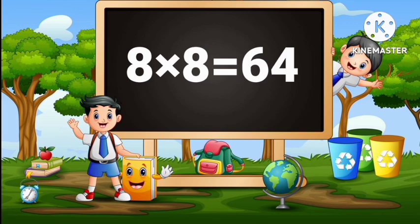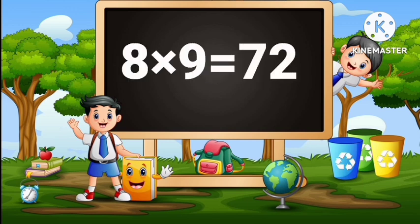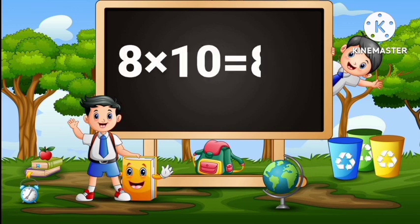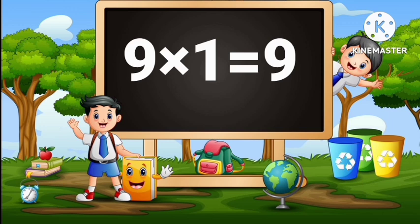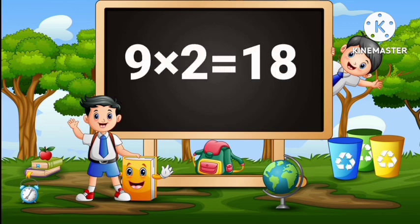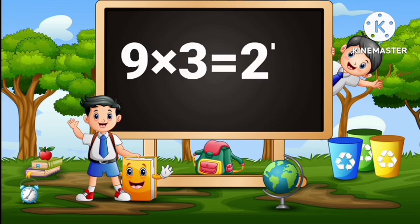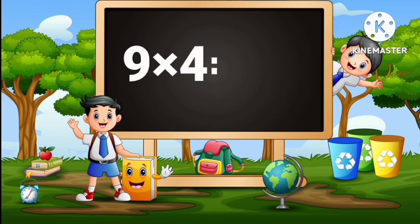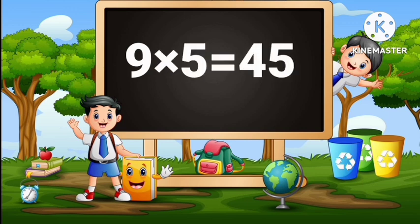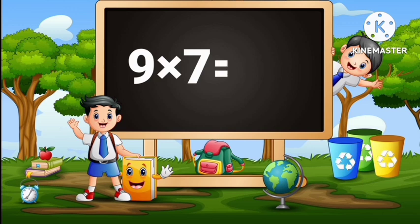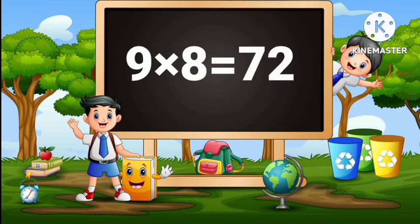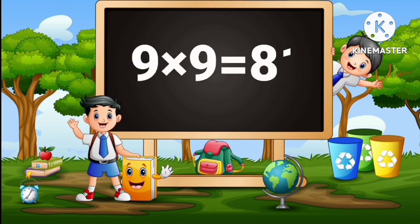Eight eights are sixty-four. Eight nines are seventy-two. Eight tens are eighty. Nine ones are nine. Nine twos are eighteen. Nine threes are twenty-seven. Nine fours are thirty-six. Nine fives are forty-five. Nine sixes are fifty-four. Nine sevens are sixty-three. Nine eights are seventy-two. Nine nines are eighty-one.